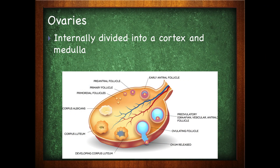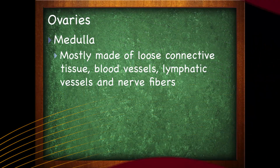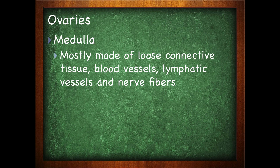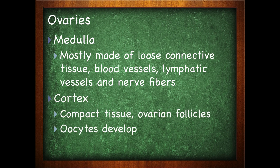The ovaries are internally divided into something called the cortex as well as the medulla. If you've followed other videos on the endocrine system or the urinary system, these terms will be familiar. The medulla of the ovaries is made mostly of loose connective tissue, blood vessels, lymphatic vessels, and nerve fibers, while the cortex is compact tissue containing ovarian follicles — the place where oocytes are going to develop.